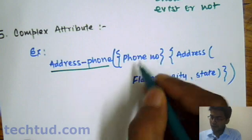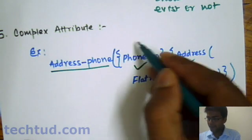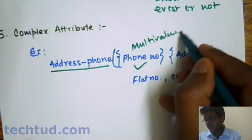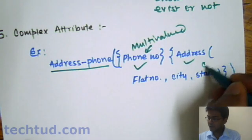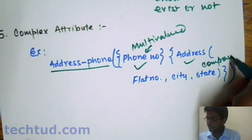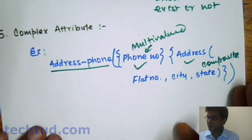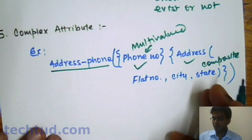This phone number may be multivalued attribute, and here this address is composite. So by nesting this multivalued, composite, and even we can nest simple attributes also with this.